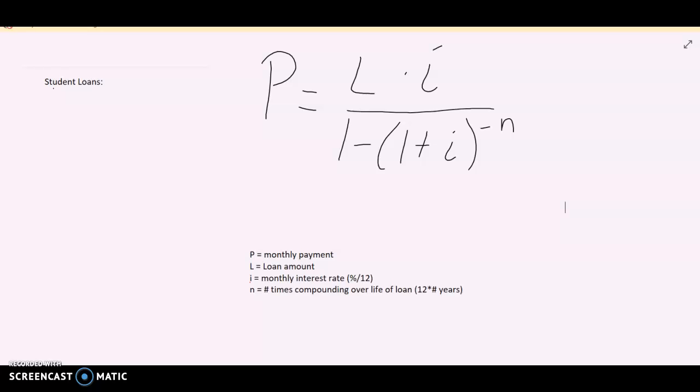So first, we're going to start with student loans with this kind of ugly looking formula. P equals capital L times I all over one minus the quantity one plus I raised to the negative n power.